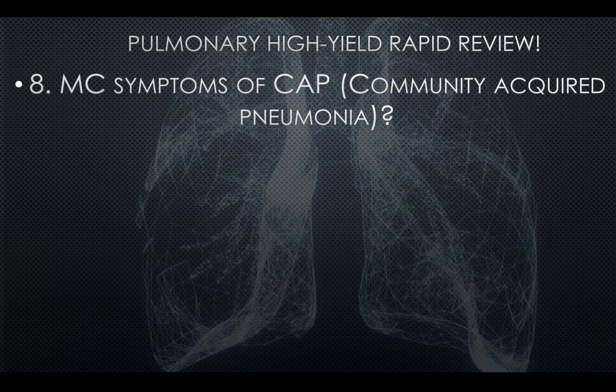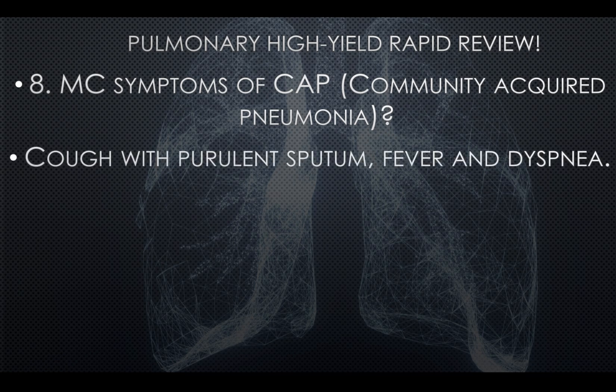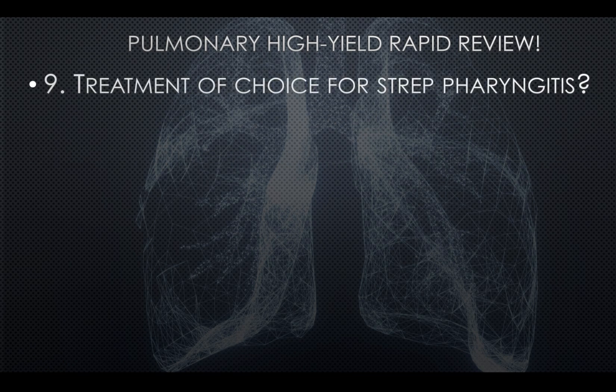Question seven: What is the most common symptom of community-acquired pneumonia? In the stem, look for a patient with a cough with purulent sputum, fever, and dyspnea. Fever and dyspnea plus purulent sputum with cough — think community-acquired pneumonia. Question eight: Treatment of choice for strep pharyngitis is penicillin VK.